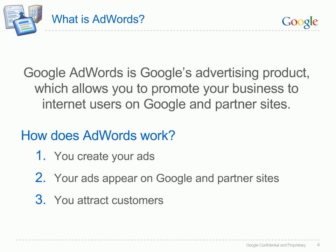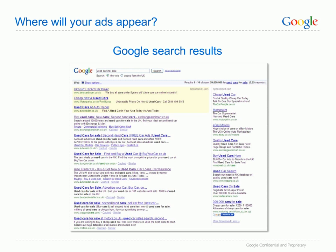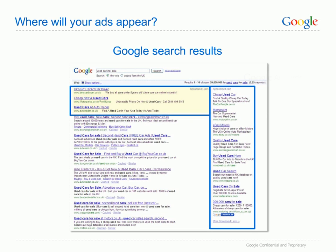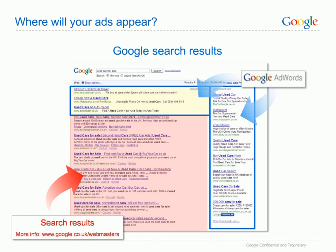But where will your ads actually appear? Let's take a look at that now. AdWords ads appear on the Google search results page, above and to the right-hand side of the search results. The search results in the main section of the page are completely separate to AdWords. You cannot influence the search results or alter the way your site appears in the natural search results by using AdWords.